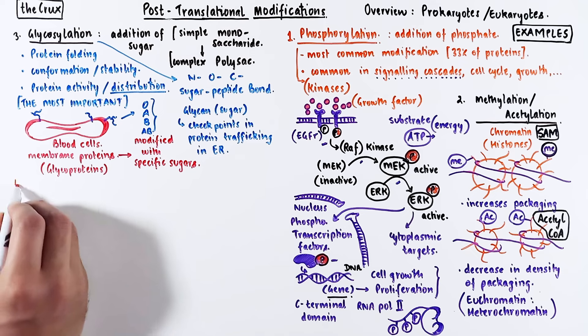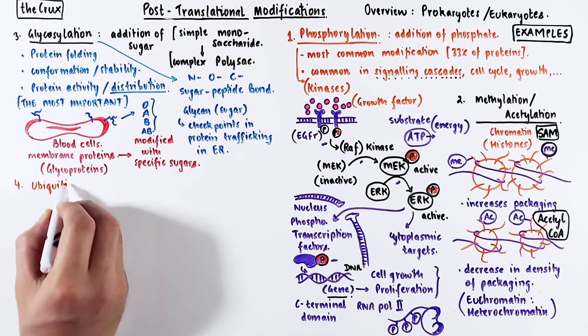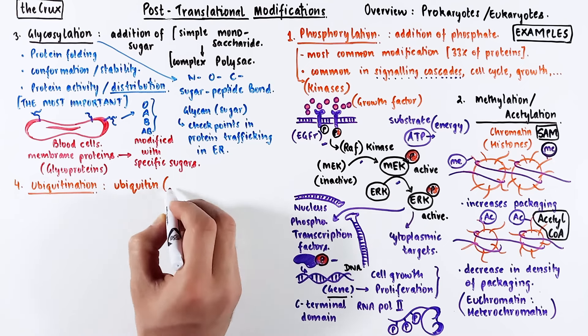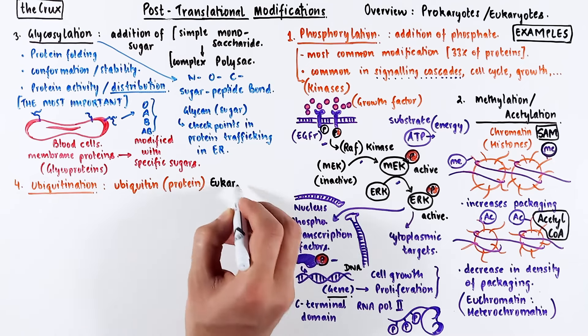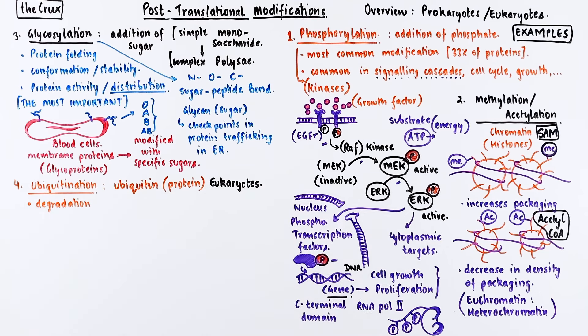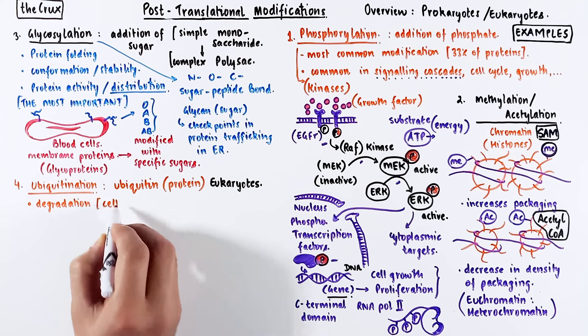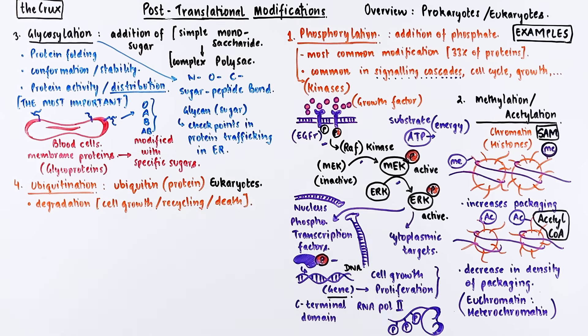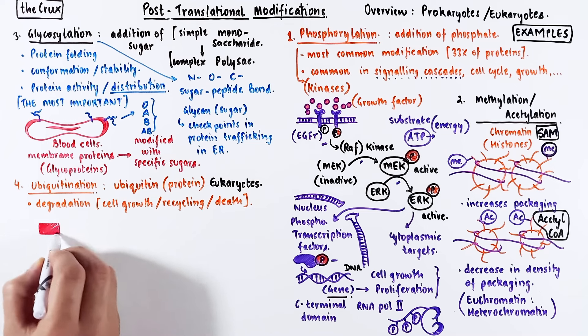Next is ubiquitination, which is the addition of a small protein tag known as ubiquitin. This modification is specific to eukaryotes and is responsible for protein degradation. This can occur in the context of cell growth, proliferation, or cell death. The idea is simple: the protein gets tagged with either single or multiple ubiquitins.